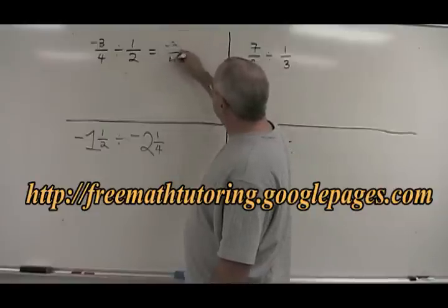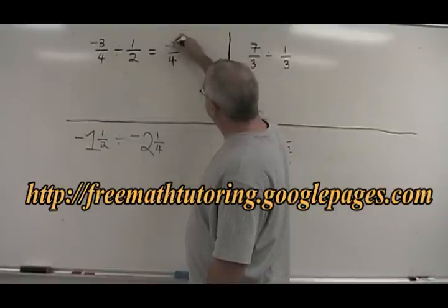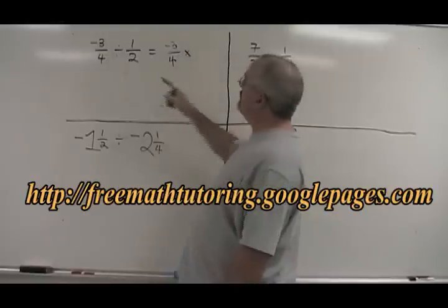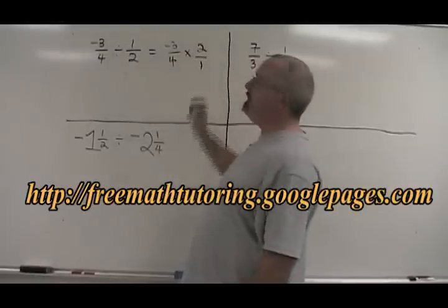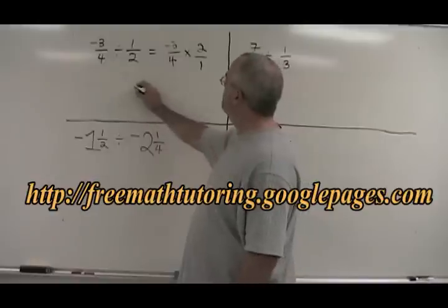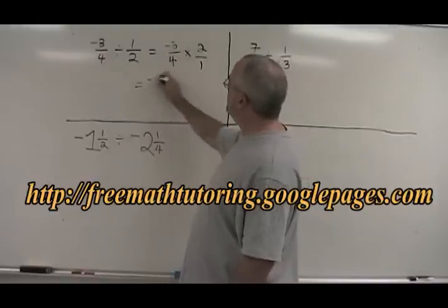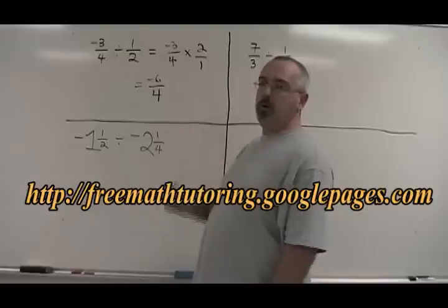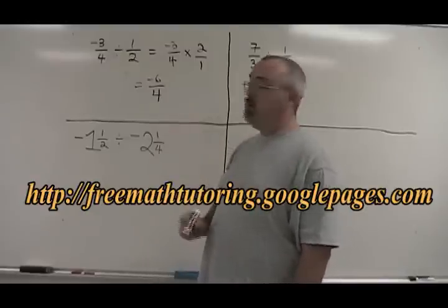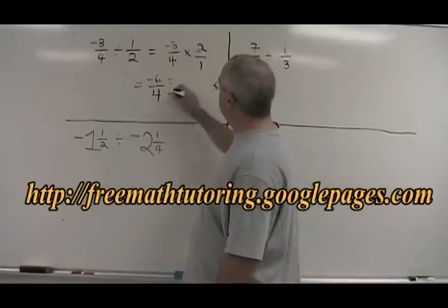Negative 3 quarters stays the same. We turn the 1 half upside down and get 2 over 1 and then we multiply it instead. Negative 3 times 2 is negative 6, 4 times 1 is 4. 6 and 4 have a common factor of 2, so let's divide both of them by 2.